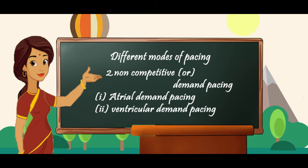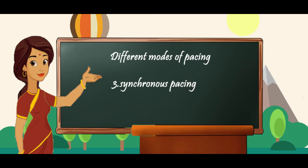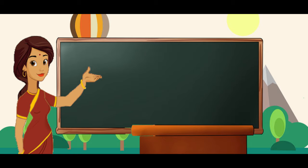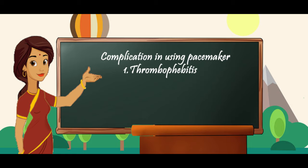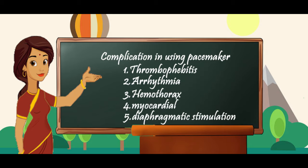The different modes of pacing include fixed rate pacing, non-competitive or demand pacing which is once again categorized into atrial demand pacing and ventricular demand pacing, synchronous pacing, atrioventricular sequential pacing and universal atrioventricular pacing. The complications in using a pacemaker may involve thrombophlebitis, arrhythmia, pneumothorax, myocardia and myocardial perforation and diaphragmatic simulation.